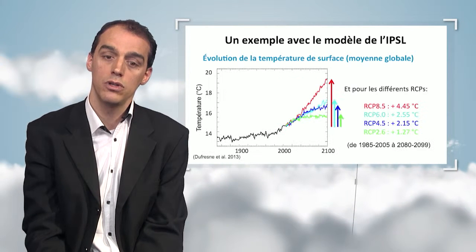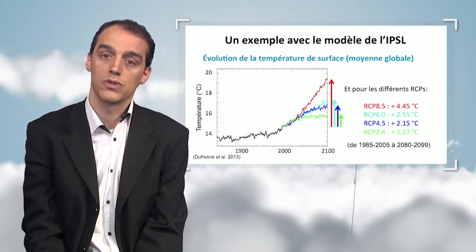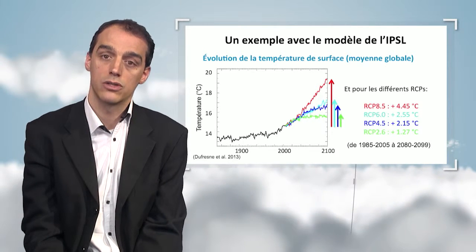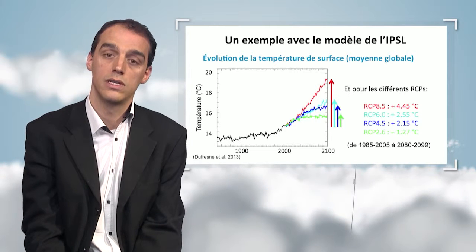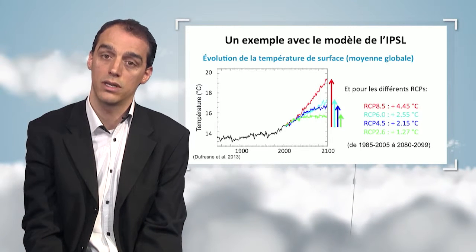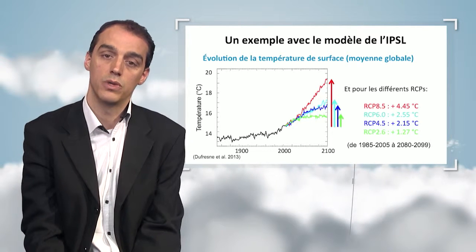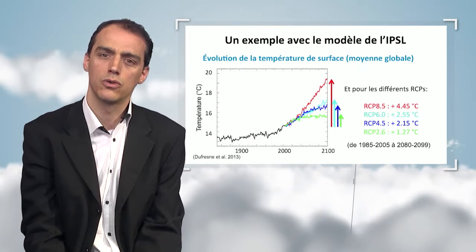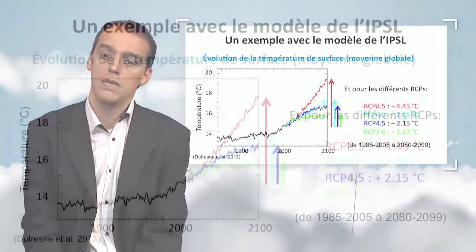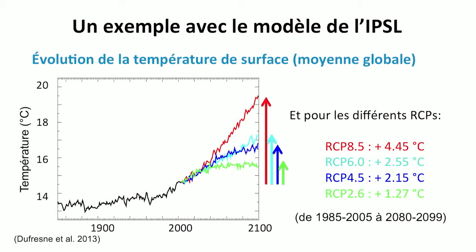With the same model, several projections were made, each linked with one given scenario of the evolution of greenhouse effect gases. Here we have the four conventional projections used by all scientists in the IPCC report. In red, the RCP 8.5 scenario shows a temperature increase of 4.45 degrees. At the bottom, the RCP 2.6 scenario shows a temperature increase of only 1.27 degrees.